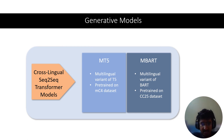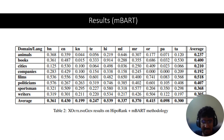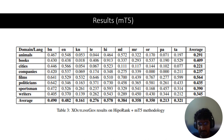We use cross-lingual seq-to-seq transformer models — mBART and mT5 — as our generative models, chosen for their cross-lingual capabilities, and train them with RL rewards. For results, mBART achieves an average ROUGE F1 score of 0.43 across all domains and languages, while mT5 achieves an average ROUGE F1 score of 0.48 across all domains and languages.